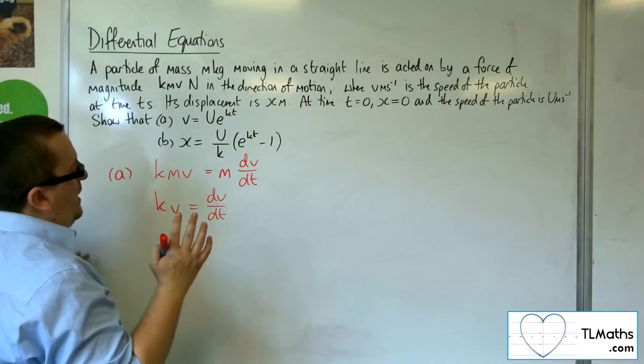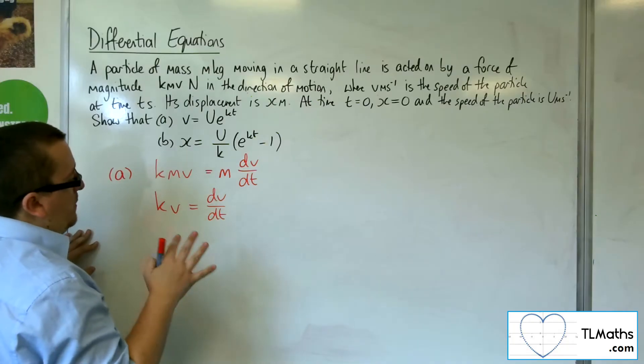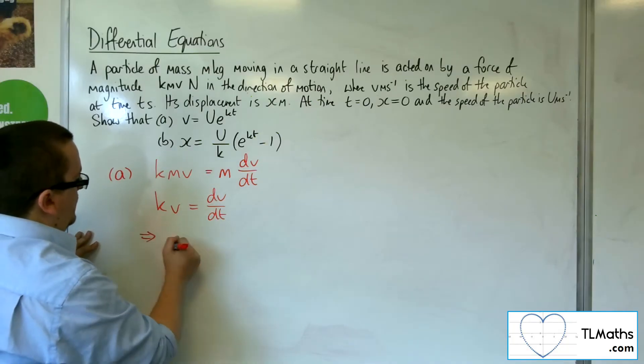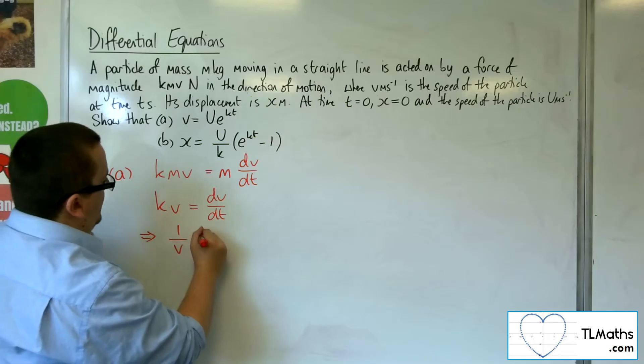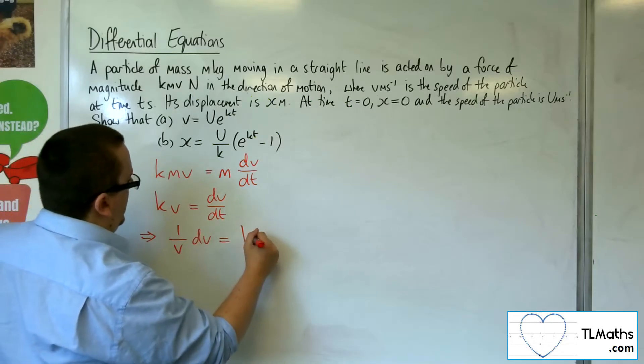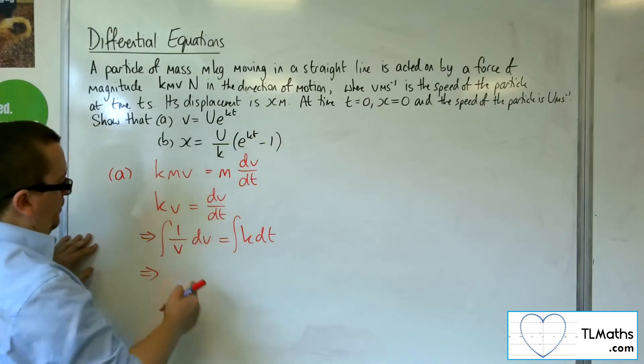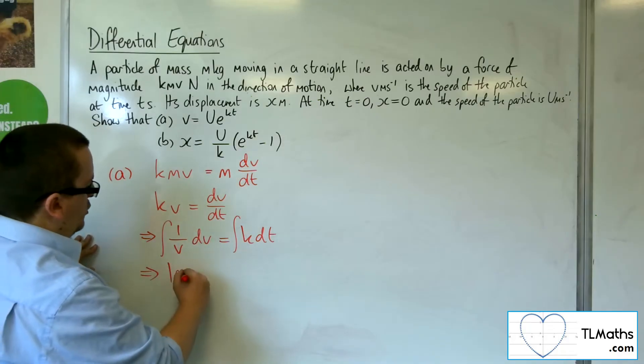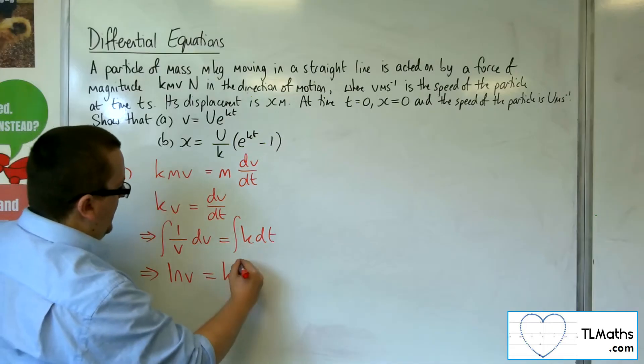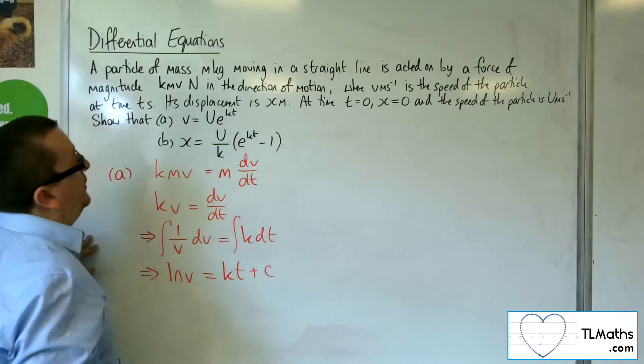If we divide both sides by v and multiply both sides by dt, we're going to get one over v dv equals k dt. Integrate both sides, so that's the separation of variables. We're going to have ln v equals kt plus some constant c.